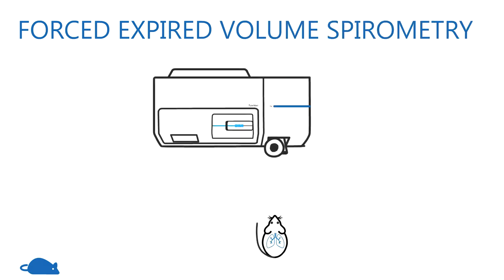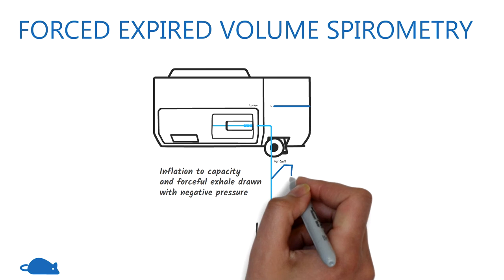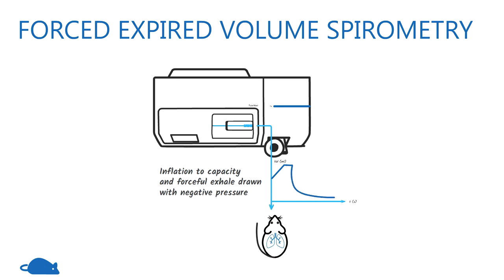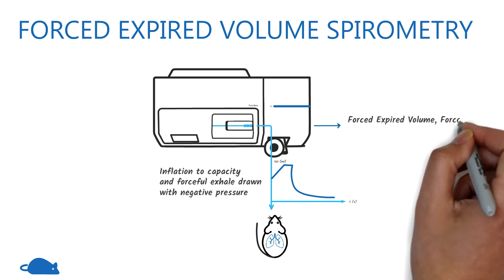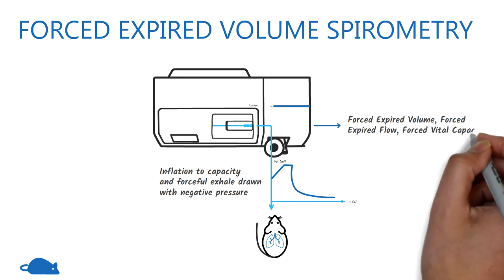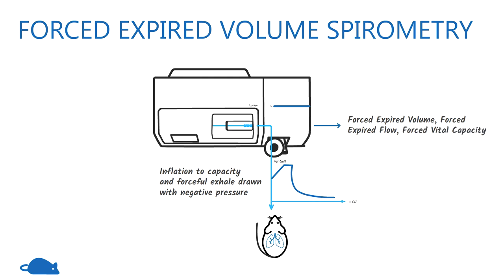In the forced-expired volume measurement, the lungs are recruited to total lung capacity and then a forced expiration is elicited with exposure to a negative pressure. This allows the flexi-vent to calculate spirometry-like measures such as forced-expired volume, forced-expired flow, and forced vital capacity.